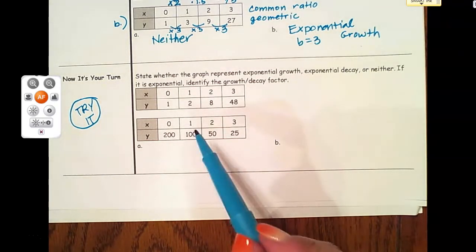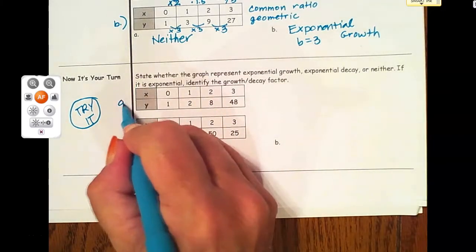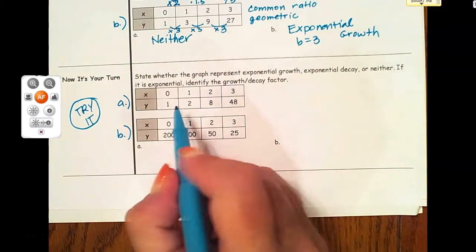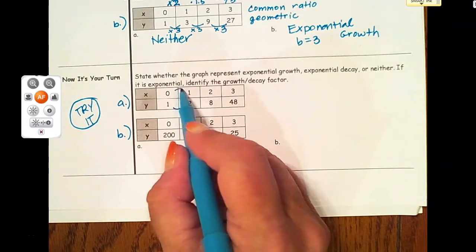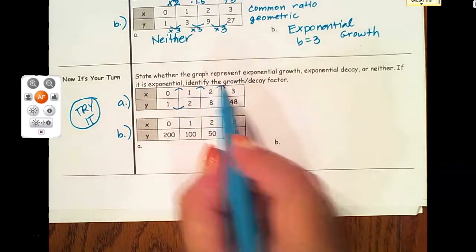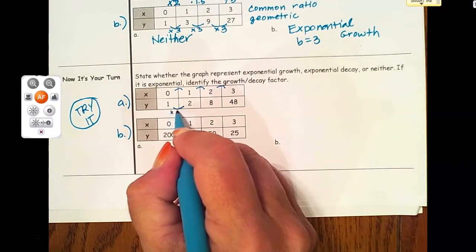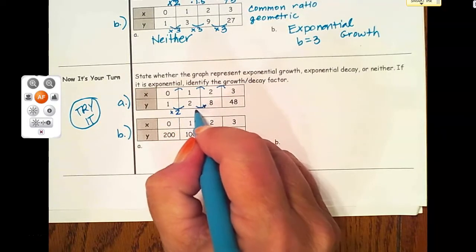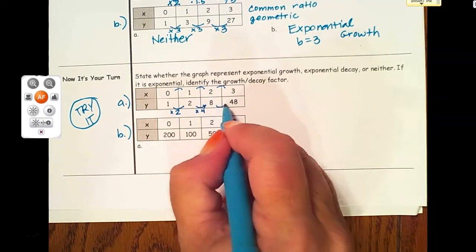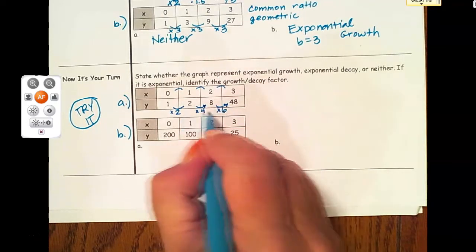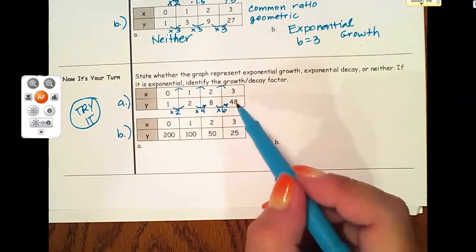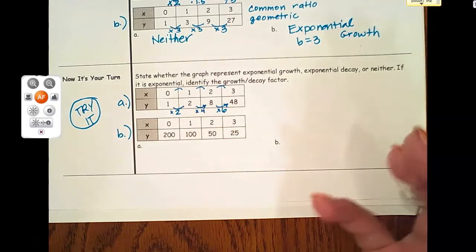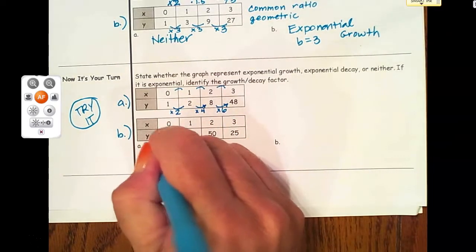Welcome back. Hopefully you paused the video. I'm going to label this one A and this one B. Our x's are always going up by one, so those are nice and predictable, and I'm looking at my y's. To go from one to two, I multiply by two. To go from two to eight, I multiply by four. From eight to 48, I multiply by six. There's a pattern I can predict, but it's not the same pattern each time. Just because something's predictable doesn't make it exponential, so A is going to be neither.